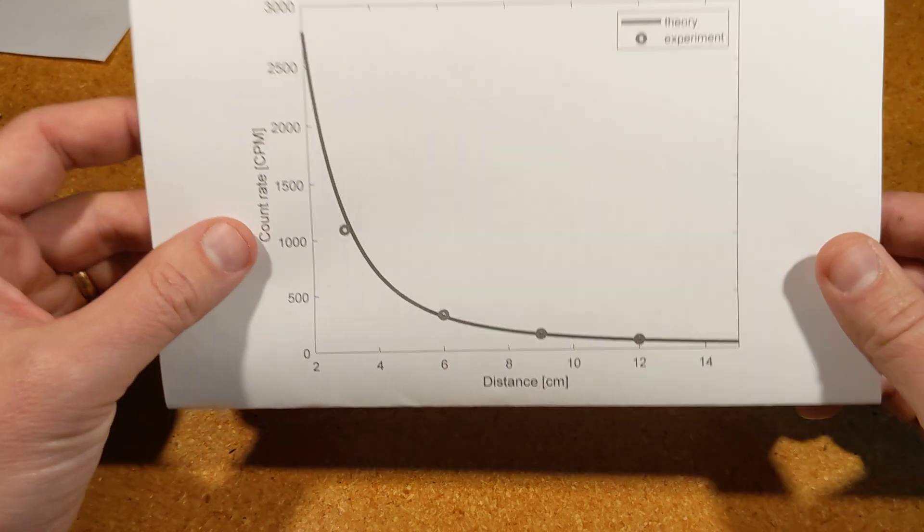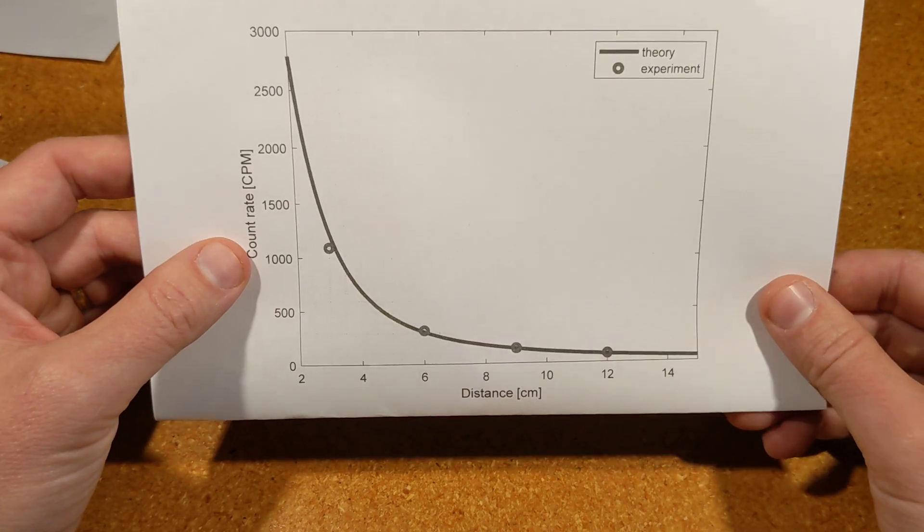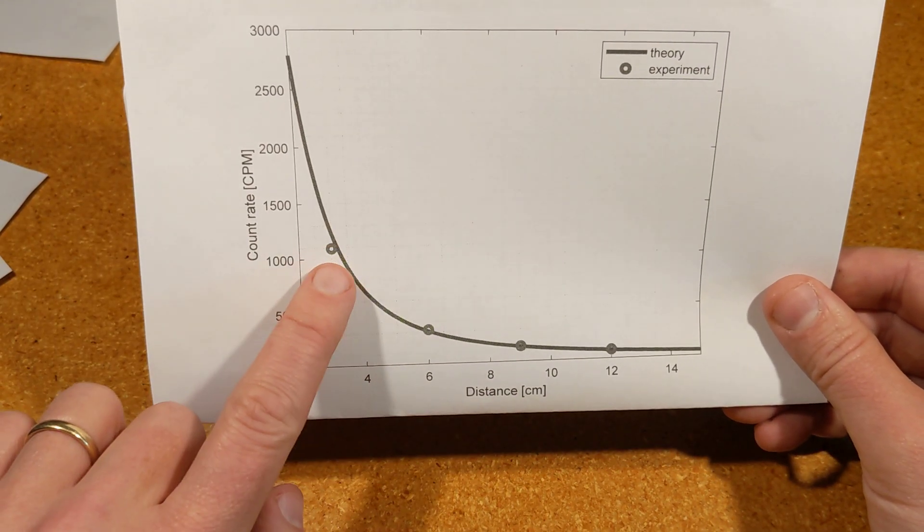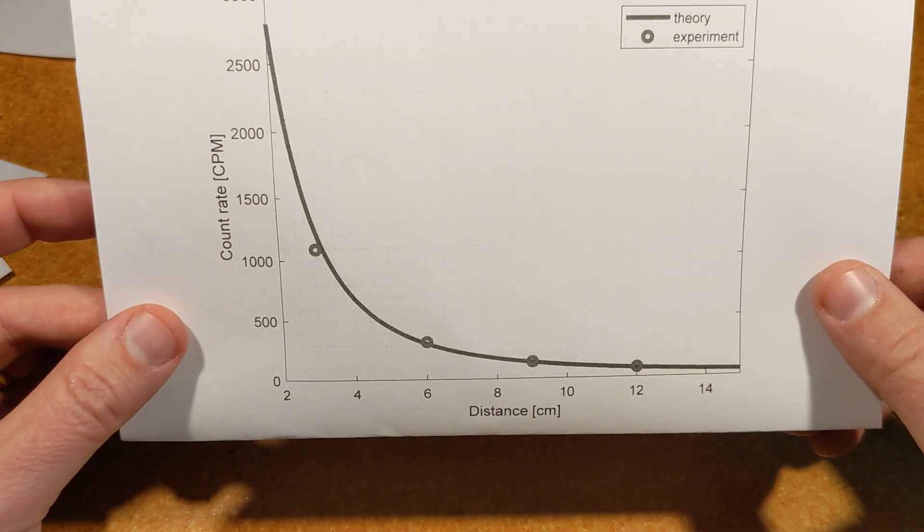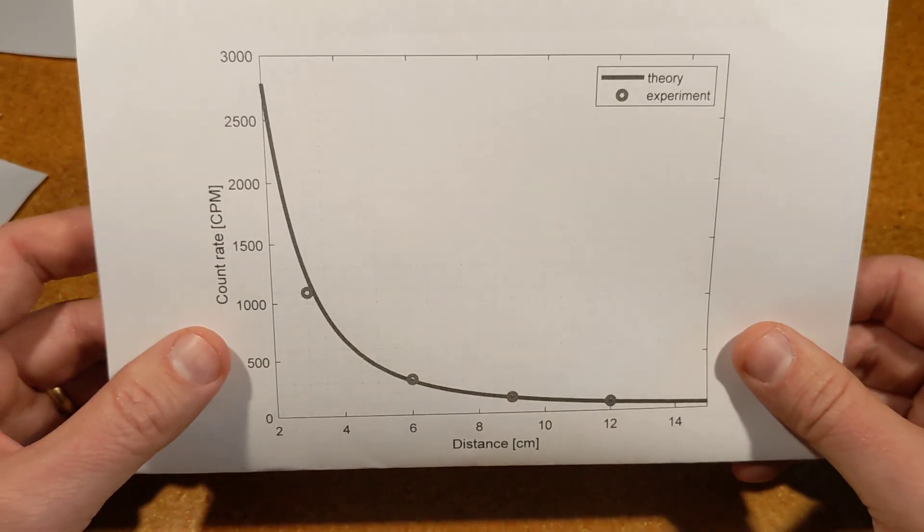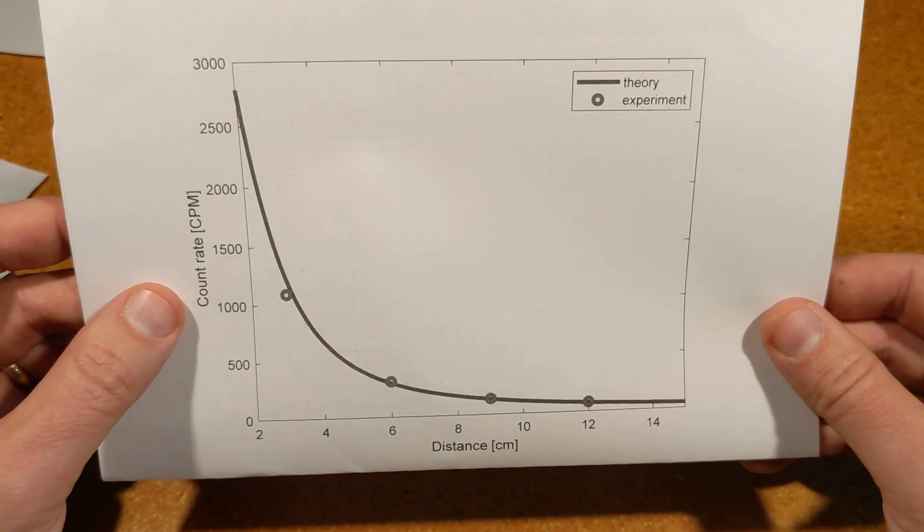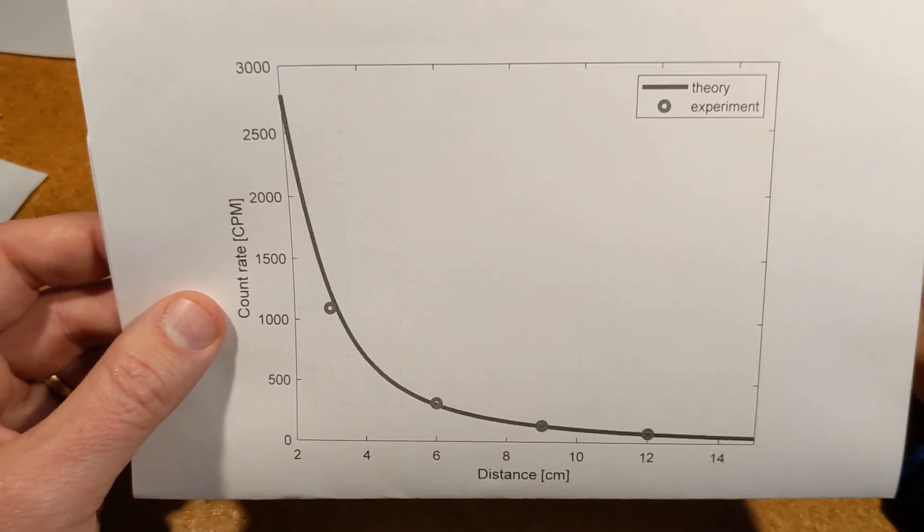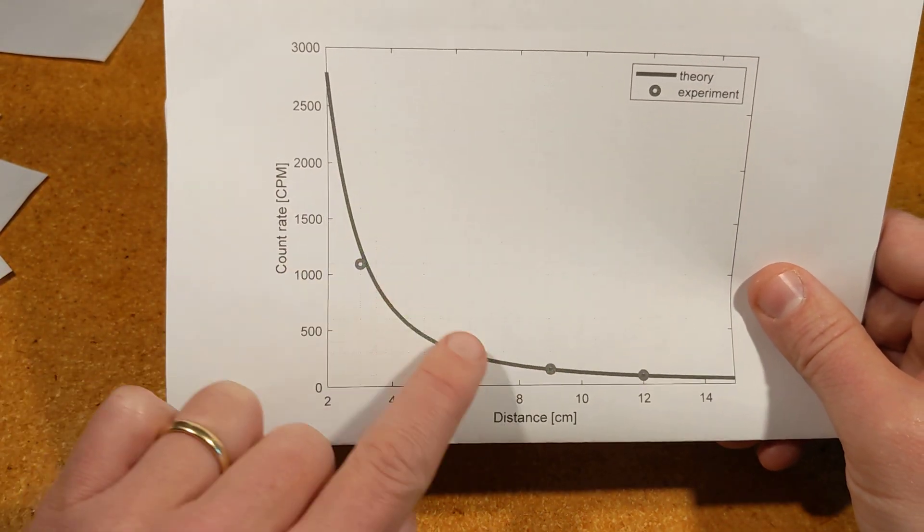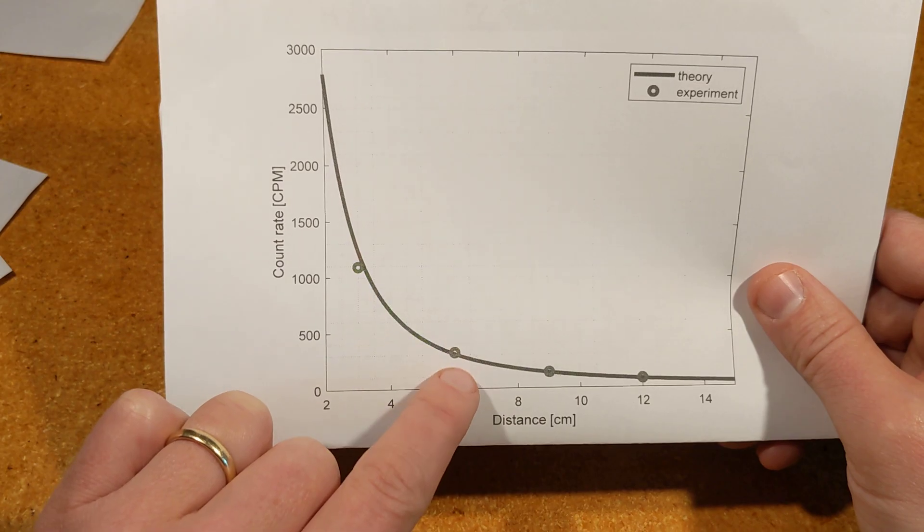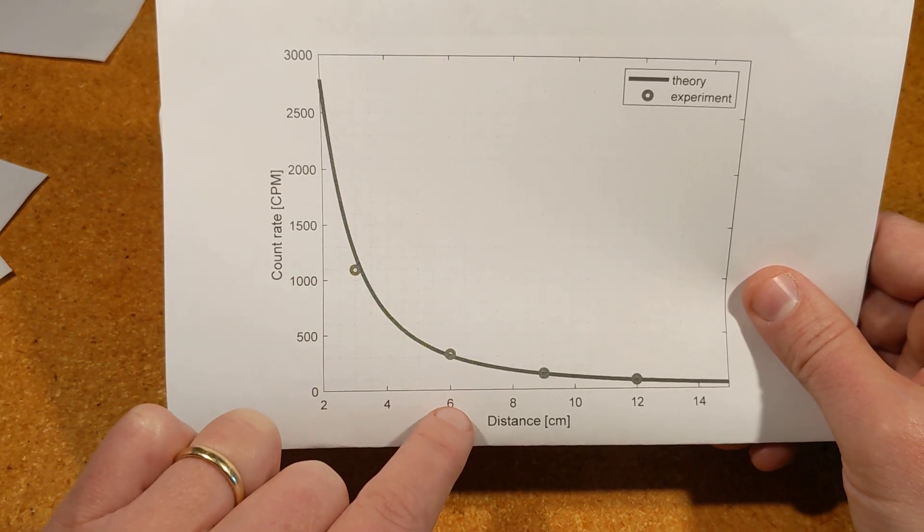This curve here is a theoretical curve generated using that formula shown before. I made a theory curve and then put my four measured data points on that curve, and as you see it agrees quite well. This is just showing that the inverse square law has been verified.